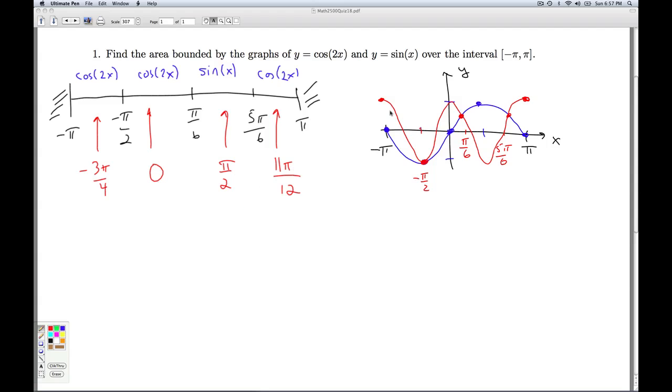So if I'm looking for the area then, it's the area there, there, there, and there. So we're going to break the integral up into a few pieces here. We always take top curve minus bottom curve. Now if I look between negative pi and negative pi over 2, and then from negative pi over 2 to pi over 6, the top curve is the cosine of 2x. So I can make that one integral.